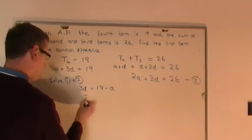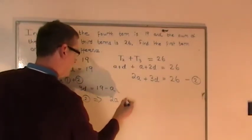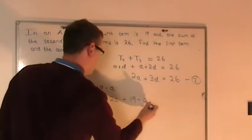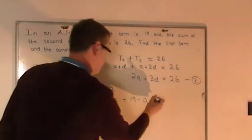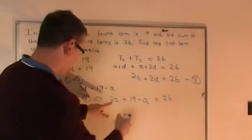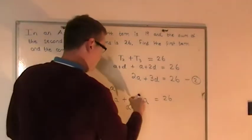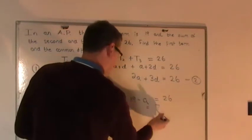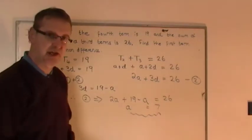Now there's a 3D in this one over here, so why don't I just substitute that into equation 2. So therefore, equation 2 will now become 2A, leave that alone, plus 3D, so that's 19 minus A. So the 3D becomes 19 minus A, equals 26. So, 2A take away 1A, that's a single A. Take the 19 to the other side, and you're going to get 26 take away 19. A turns out to be 7. So there you go, there is the first term, A equals 7.